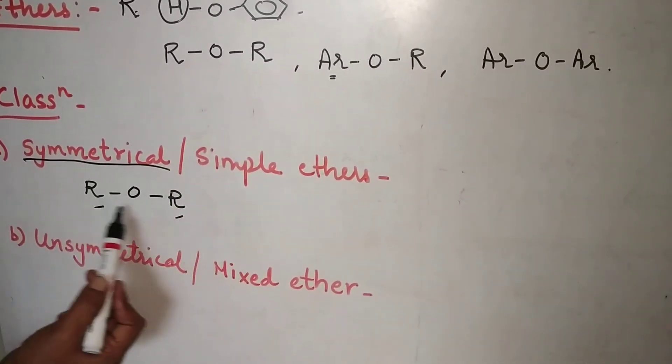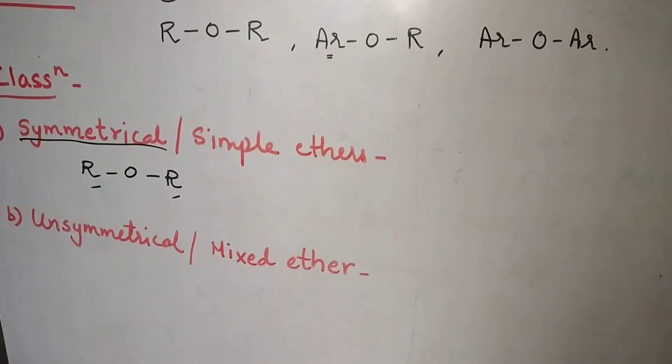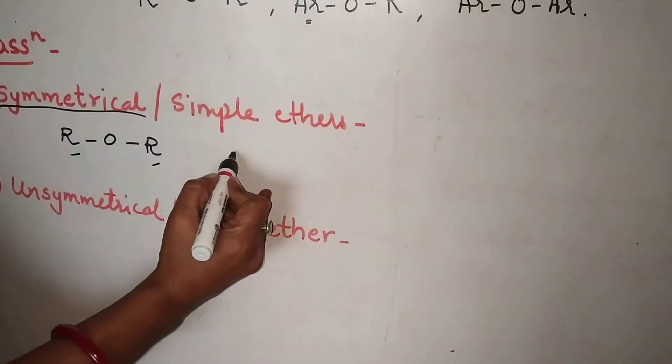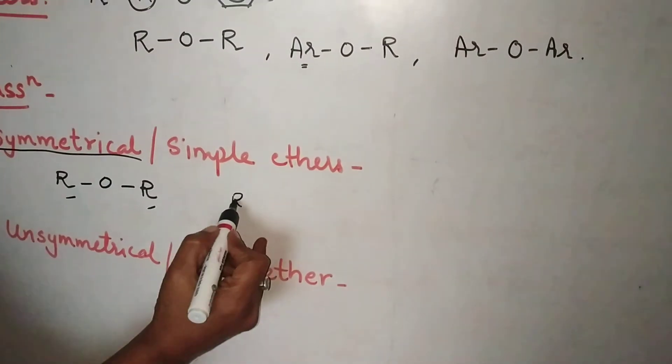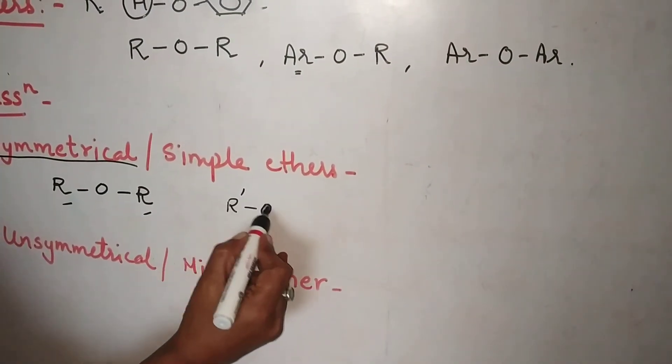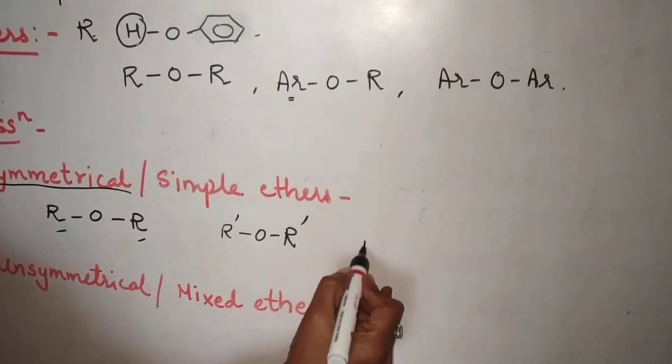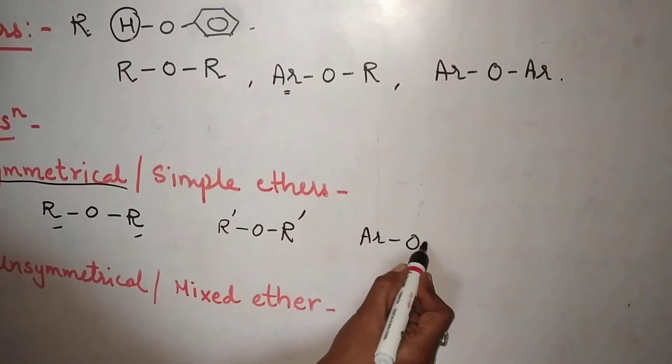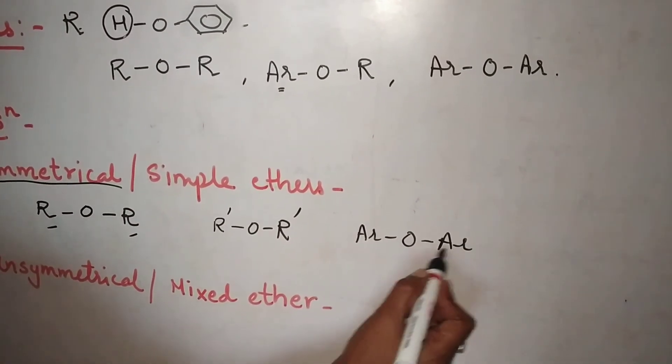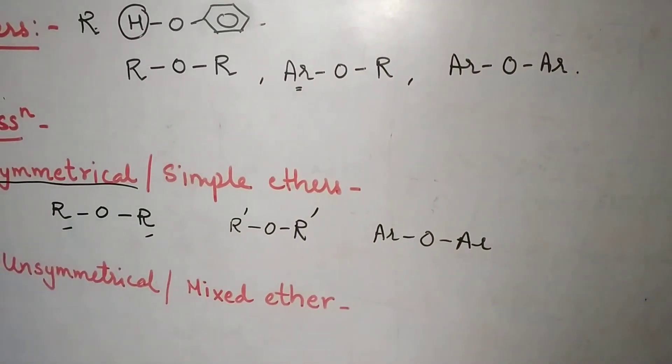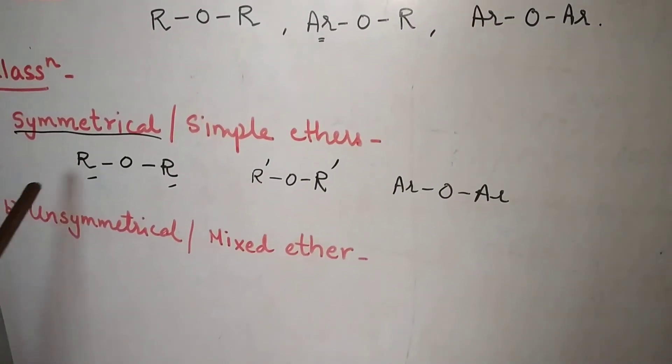The two R groups are same, you call it a simple ether. Or you can have R dash O R dash, same. You can have aromatic ring O Ar, both the aromatic rings are same. Such ethers are said to be simple or symmetrical ethers.